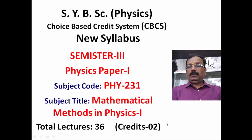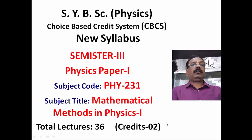Dear students, today I am going to tell you about the new syllabus of SIBC Physics. This syllabus is according to the Choice Based Credit System, that is CBCS. This is the third semester and I am going to teach you Physics Paper First. The subject code of this paper is PHY231, and the subject title is Mathematical Methods in Physics. To complete the whole syllabus we require a total of 36 lectures and we will get 2 credits.